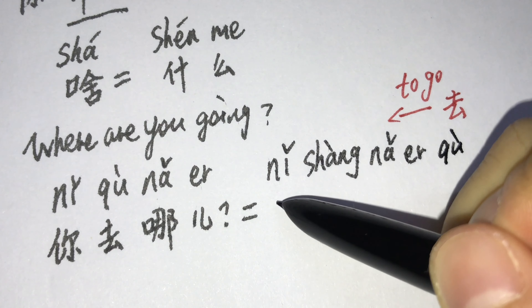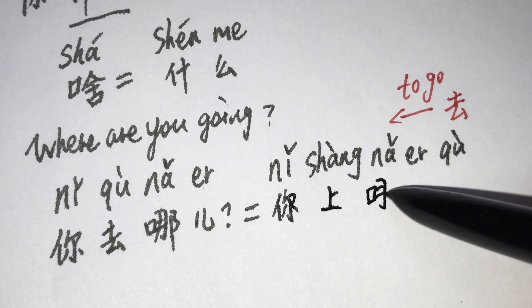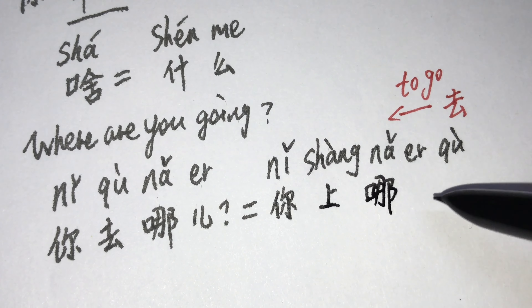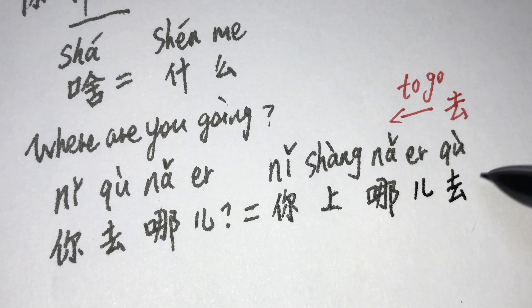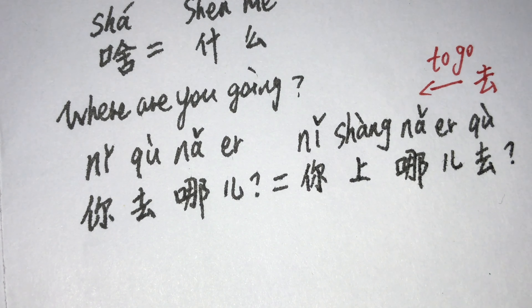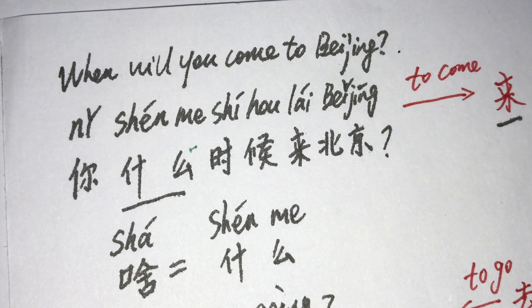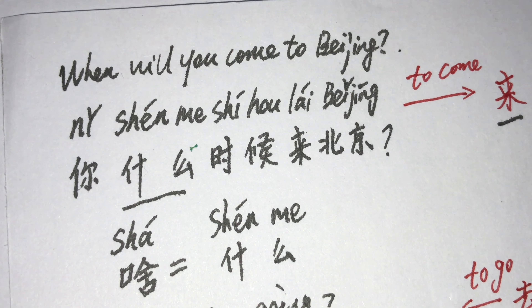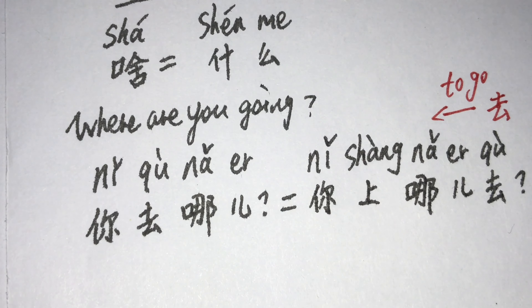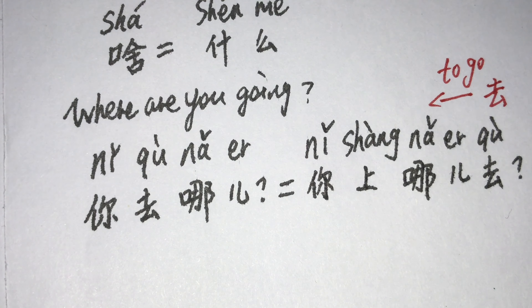Where are you going? 你上哪儿去. 你去哪儿? 你上哪儿去. Where are you going? When will you come to Beijing? 你什么时候来北京? 你啥时候来北京? 去, to go. Where are you going? 你去哪儿? 你上哪儿去.